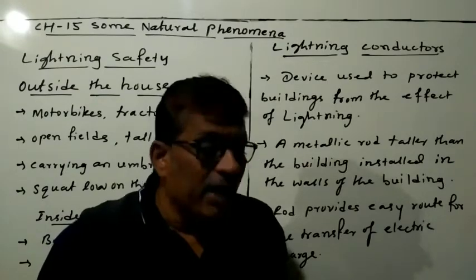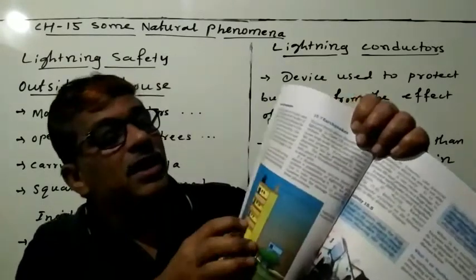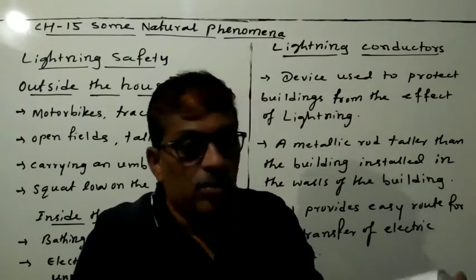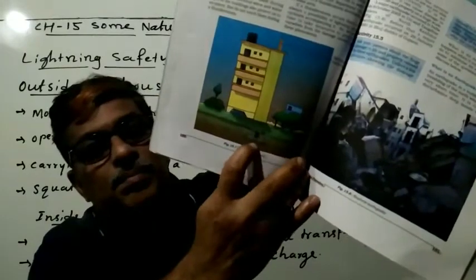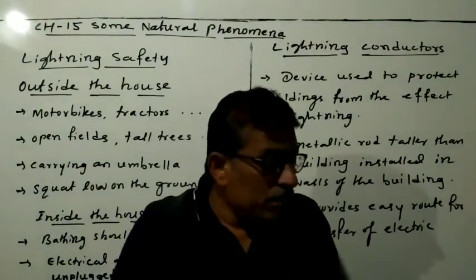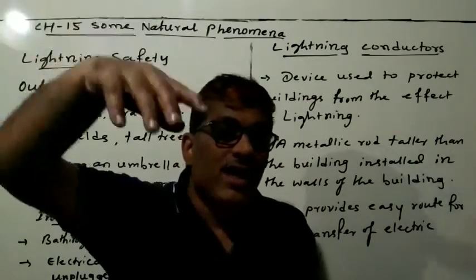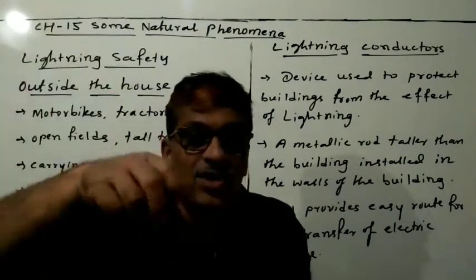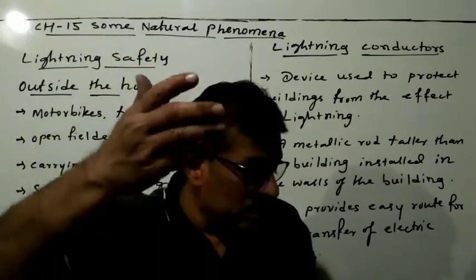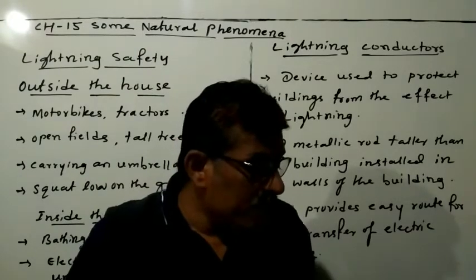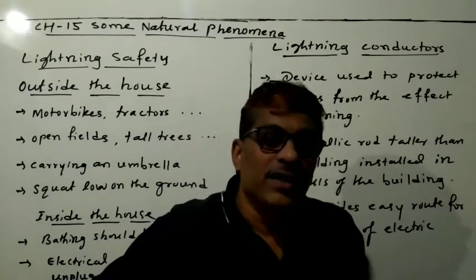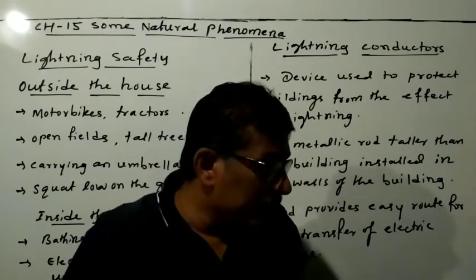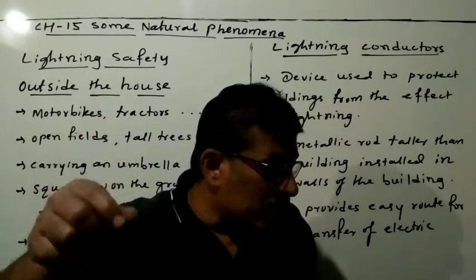One end of the rod is kept out in the air, and the other end is buried deep in the ground. The rod provides an easy route for atmospheric electric charges: since metal is the best conductor, the electric charge travels through the rod and is discharged into the earth. In this way, the building and its occupants are protected from electric shock.